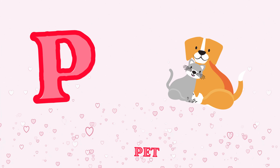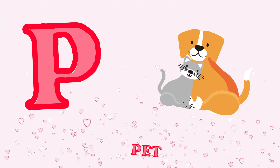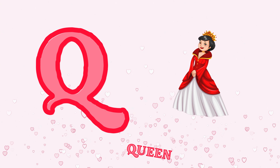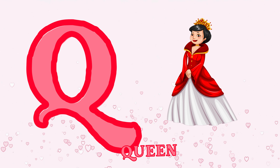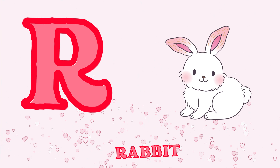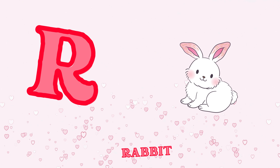P is for pet, b-b-bat. Q is for queen, c-c-queen. R is for rabbit, b-b-rabbit.